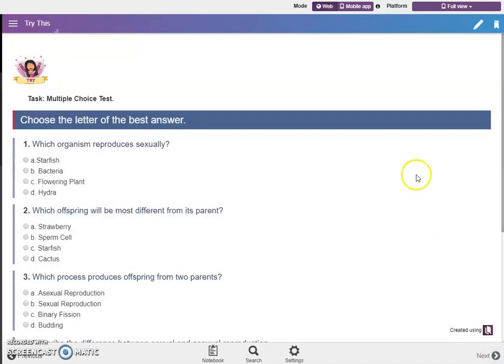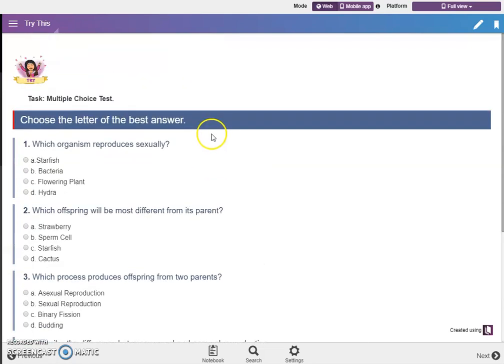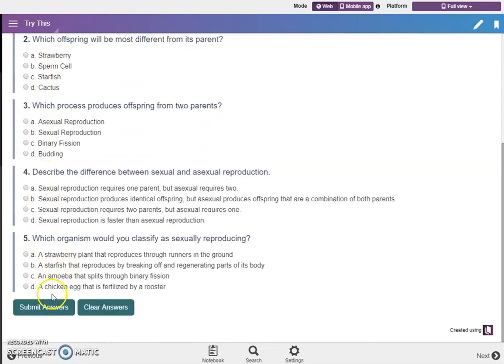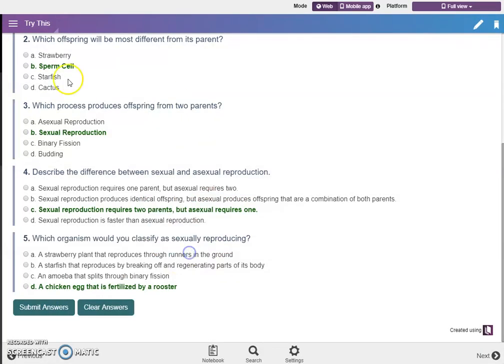Let's proceed to the next page. So we have this pre-test for our students. After they answered one to five questions, just click submit and they will see their scores. So let's just clear the answers there.